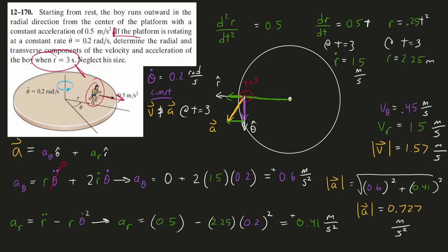We have the transverse and radial components of our velocity and the transverse and radial components of our acceleration. It was a bit of a tricky problem in the beginning, just deciphering this 0.5 acceleration. Hope everything made sense. If you have any questions, please post them in the comments.